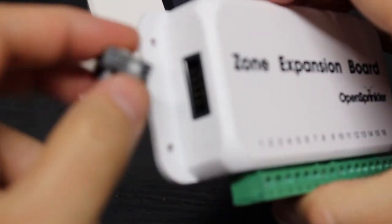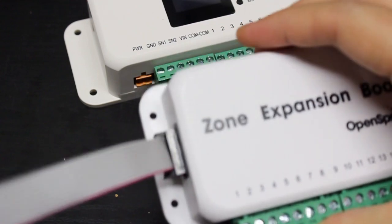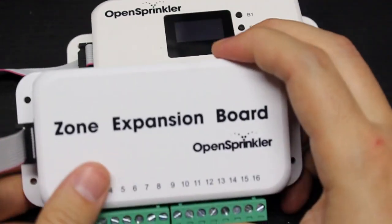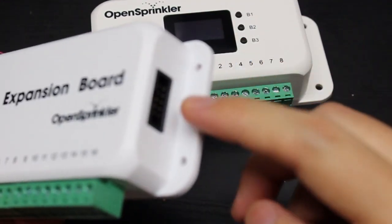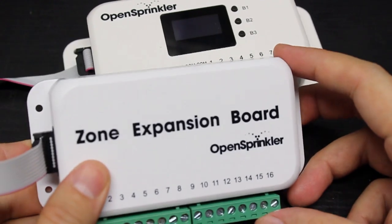To connect the expander, you can simply use the expander cable. One end plugs into the zone expander, the other end plugs into the main controller. If you have multiple expanders, you can use the other connector on the expander to chain together multiple expanders.